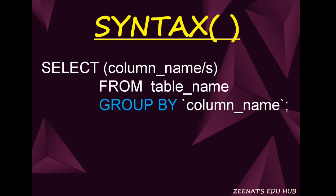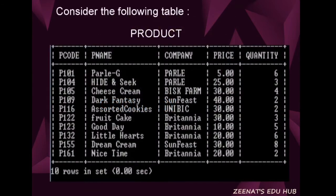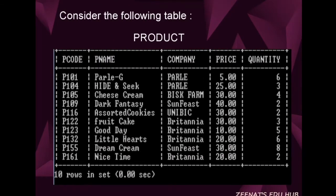To understand it better, let's consider the following table, i.e., 'product'. It has five fields or columns: p_code for product code, p_name for product name, then company, price, and quantity. It has ten records or rows displaying details of products.